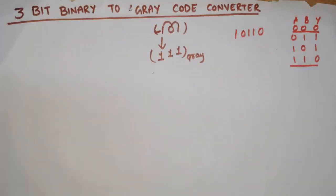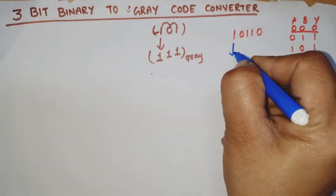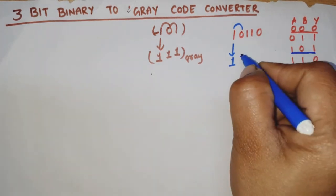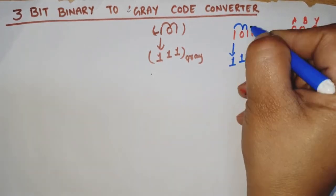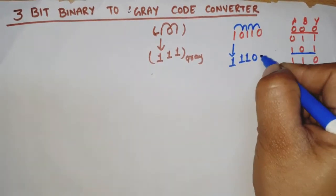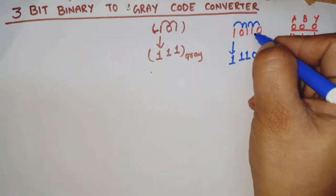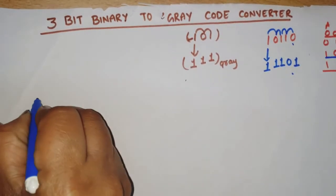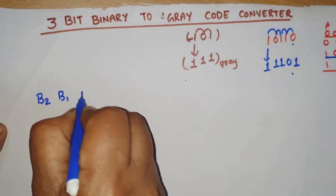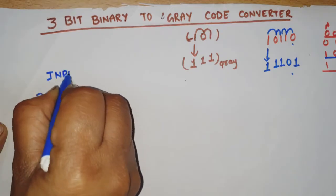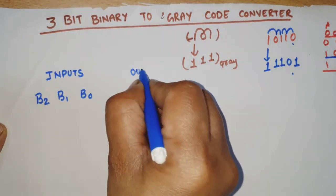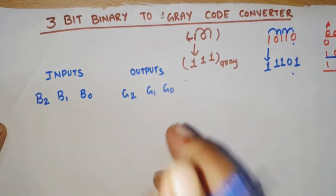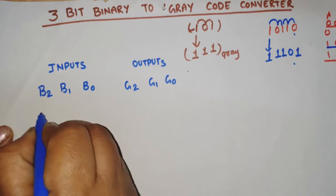Applying the same process: the first bit stays the same, then XOR adjacent bits. We have inputs B2, B1, B0 and outputs G2, G1, G0. Now I'm writing all possible combinations in binary for our truth table.